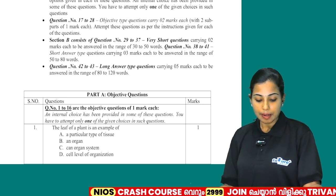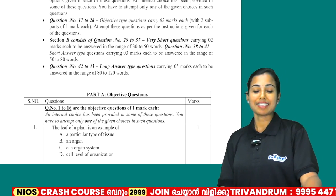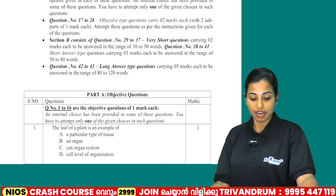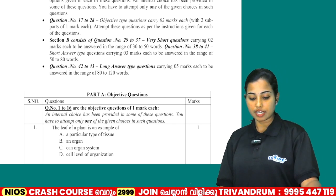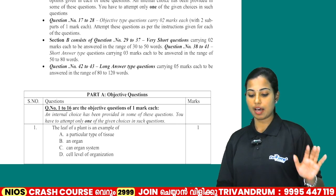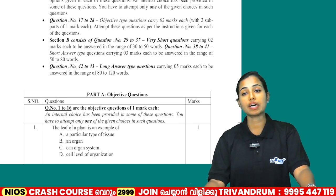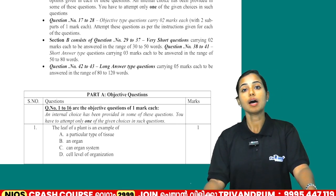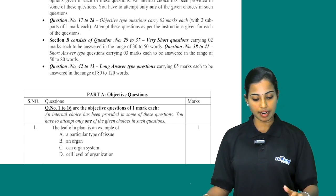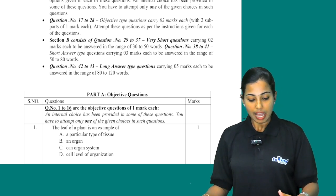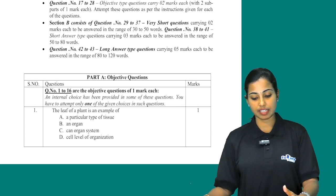Questions 17th, 18th onwards — one question has two marks. That is why we have Section A covering questions up to around the 28th, with each question carrying 2 marks.